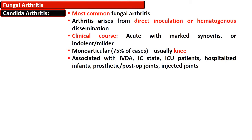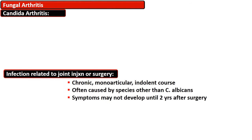Candida arthritis clinical course is acute with marked synovitis, or may be indolent and minor. It is monoarticular in 75% of cases and the knee is most commonly affected. It is seen in intravenous drug abusers, immunocompromised patients, ICU patients, hospitalized infants, and those with prosthetic or postoperative or injected joints.